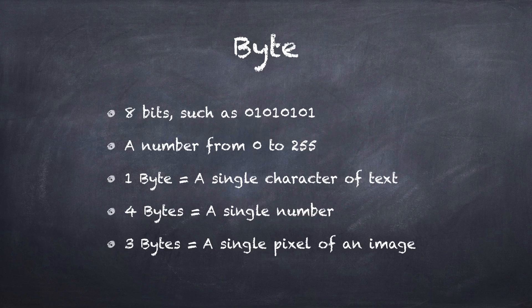The root of all these terms is the byte. So what is a byte? A byte is 8 bits. Bits are either ones or zeros. For instance, 01 01 01 01 — that's 8 bits. That's one byte.